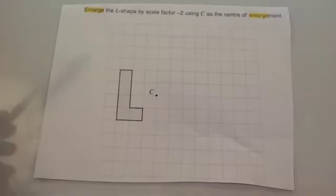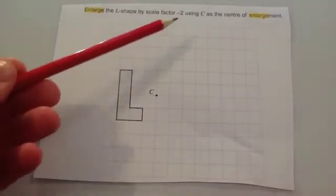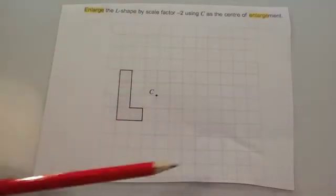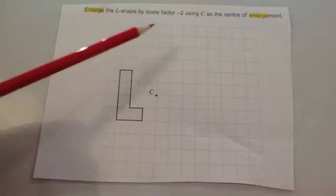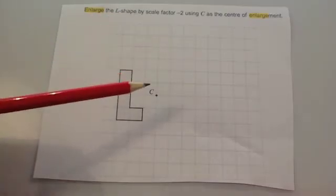In this video we're going to look at how to enlarge a shape with a negative scale factor. Here's an example: we're going to enlarge this shape with a scale factor of negative 2, using C as the centre of enlargement.